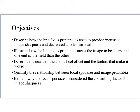We will talk about the anode heel effect and the factors that make it worse, what things make it better, how do we decrease it. Those are things we can hopefully have a solid illustration in our mind that allows us to capture how that works. We'll also quantify the relationship between focal spot size and image penumbra, and explain why focal spot size is considered the controlling factor for image sharpness. Any question about image sharpness, the first thing I'm thinking about as a technologist is focal spot size.